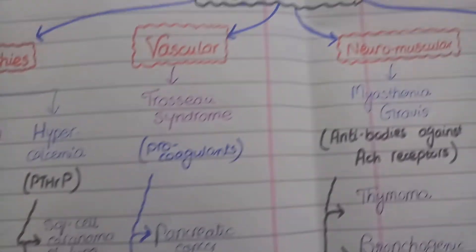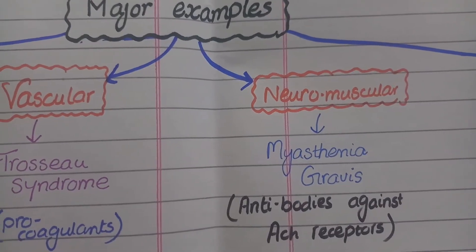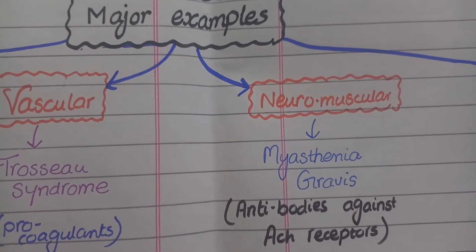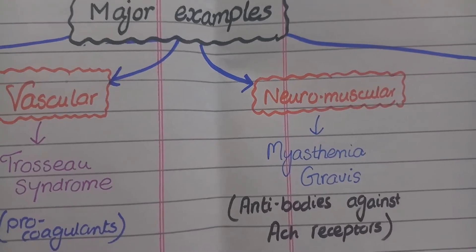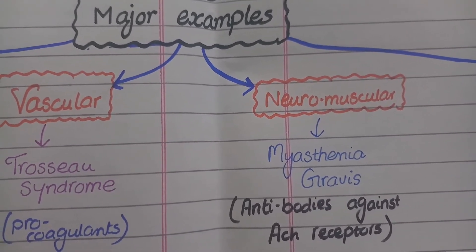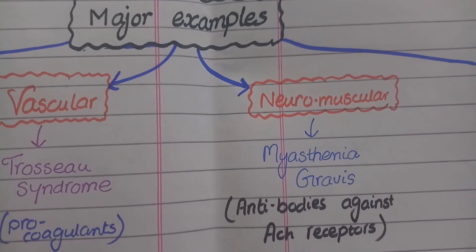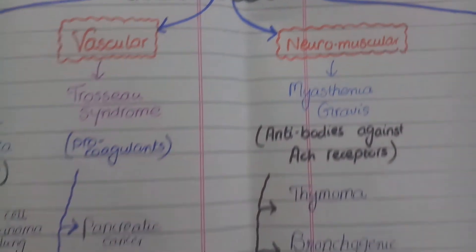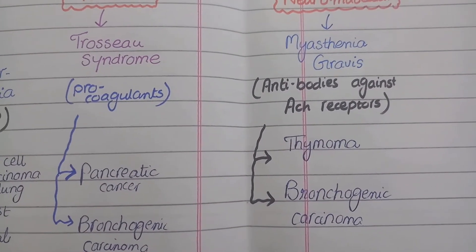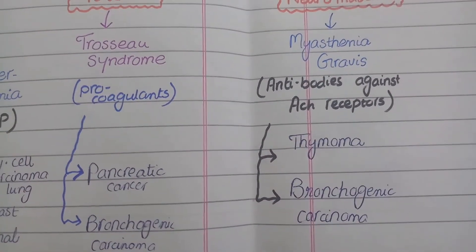The third category of paraneoplastic syndrome is neuromuscular, and the notable disease in this category is myasthenia gravis. Myasthenia gravis has an immune etiology as a paraneoplastic effect — it is caused by antibodies that react against acetylcholine receptors at the neuromuscular junction. The major examples include thymoma, which is a tumor of the thymus, and bronchogenic carcinoma of the lung. The more important of these is thymoma.